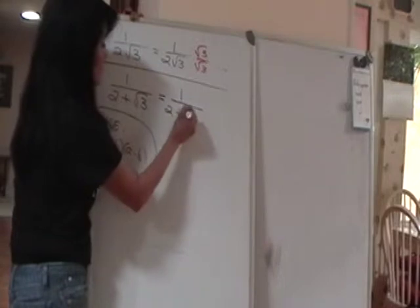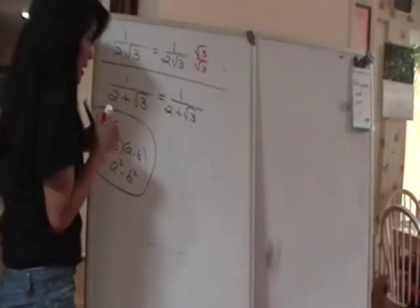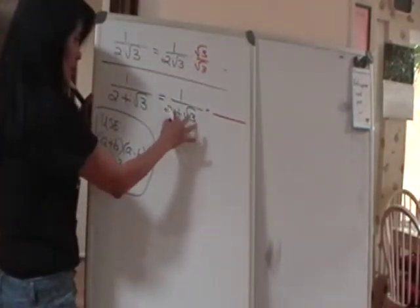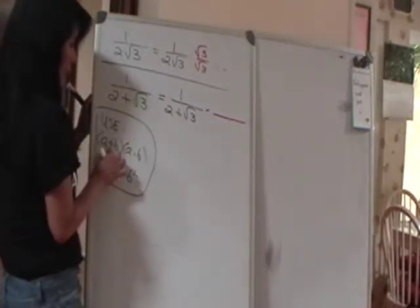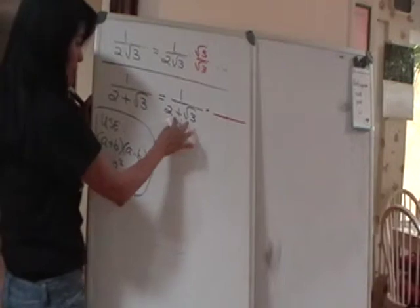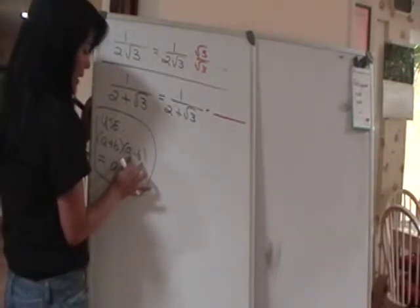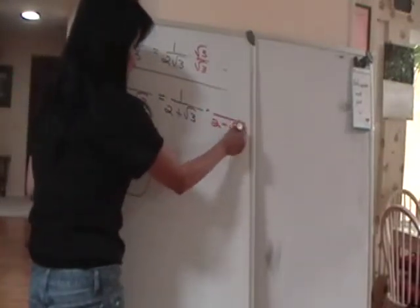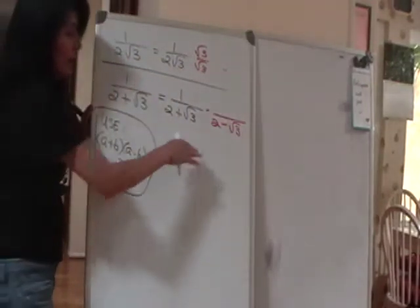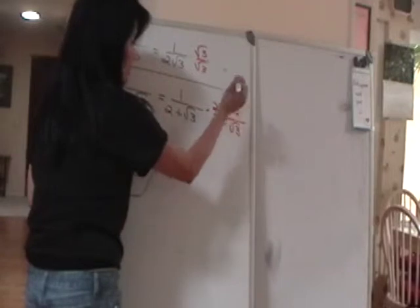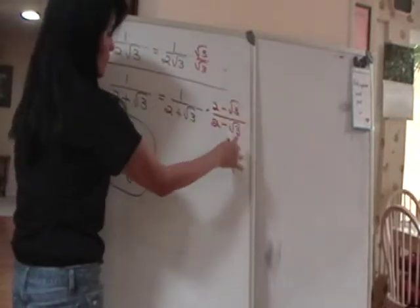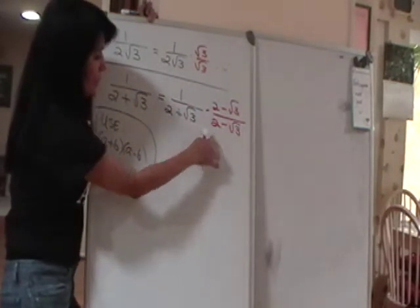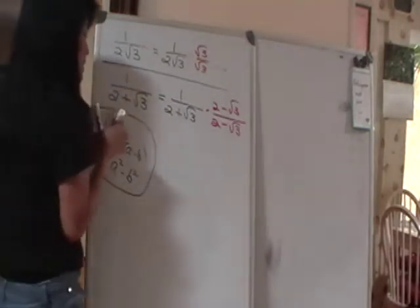I usually want you to copy the original problem so we know where it started. Our multiplier: if you look at this denominator, it really looks like an a plus b form. So the partner factor I need is the minus counterpart. If I have 2 plus square root of 3 in the denominator, I need to multiply by 2 minus square root of 3 — and what I do to the denominator, I have to do to the numerator. That's the factor of 1 you're multiplying by.